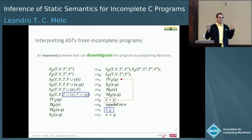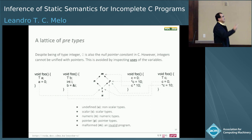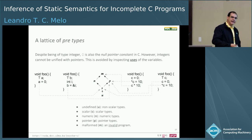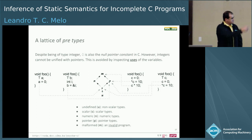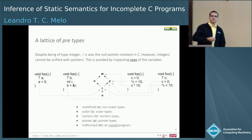This is a formal description of our disambiguation mechanism. This is our lattice of pre-types that I mentioned before. It consists of five elements: U, which is undefined; everything that is not a scalar; and scalar in C means either pointers or arithmetic types. Scalars come right after, which is what we are particularly interested in. Then we have either numeric or pointer. And if the program is malformed, we have a top element indicating the program is malformed.